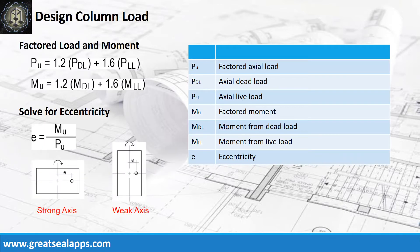and axial live load. Get the factored moment from moment dead load and moment live load, then solve the eccentricity at the strong or weak axis.